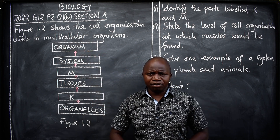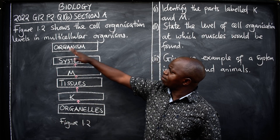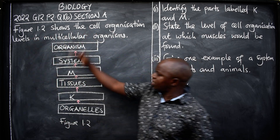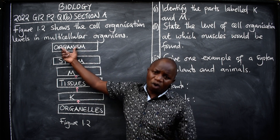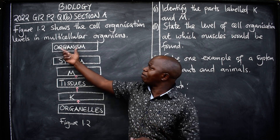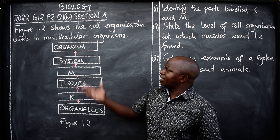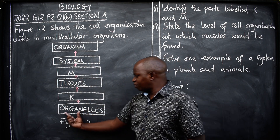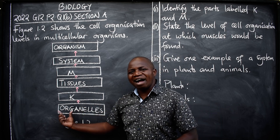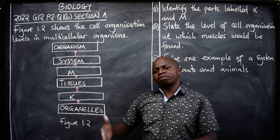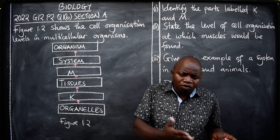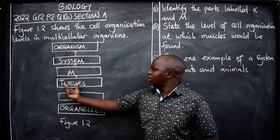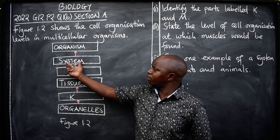These multicellular organisms go through levels in the formation of an organism. It all starts from organelles — but of course we also have simple molecules and complex molecules — then organelles, then tissues, then system, and finally the organism.